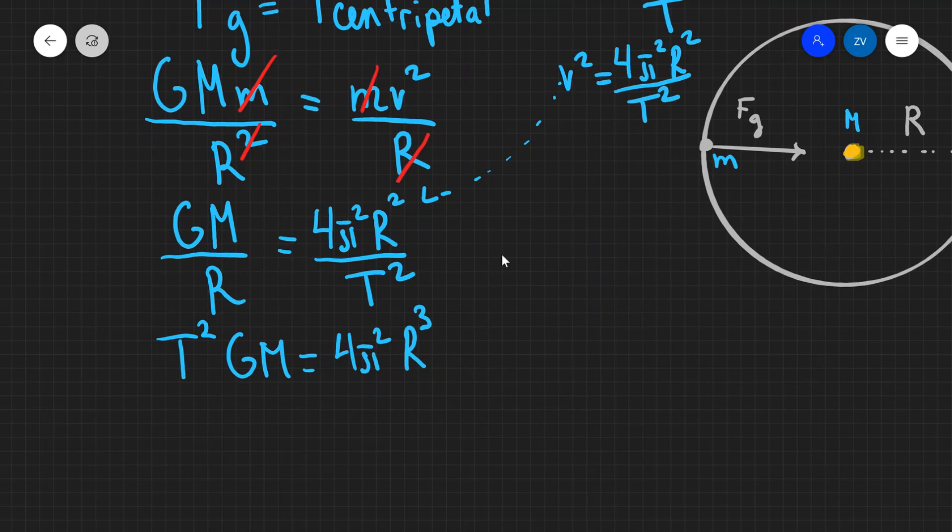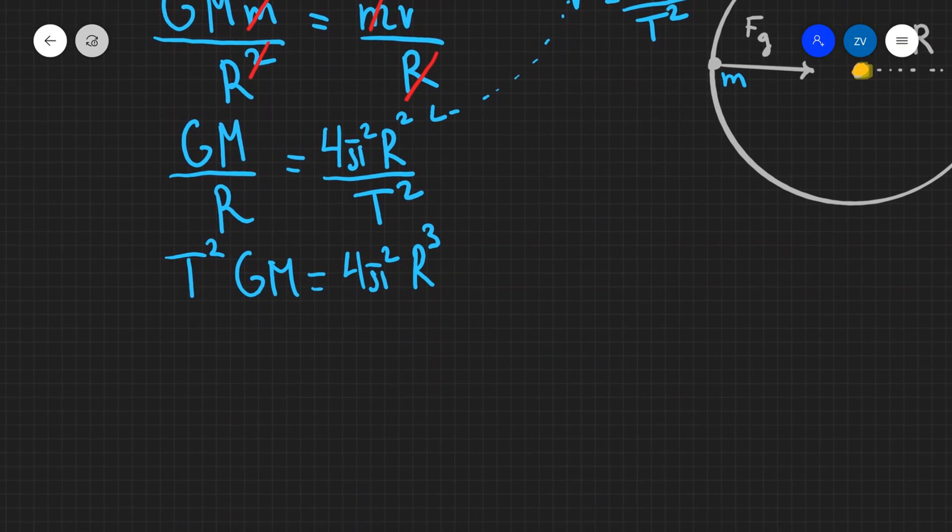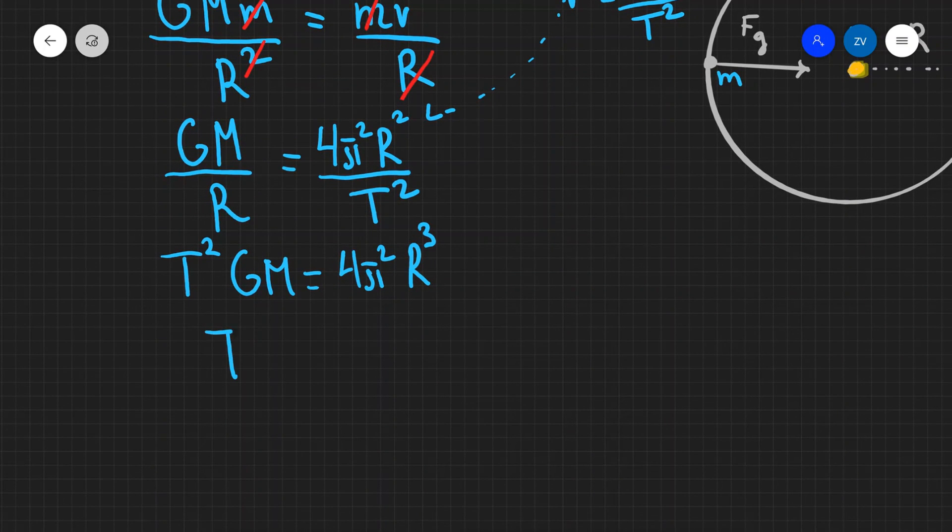My final step would be just to rearrange for t squared essentially. And what I'm going to get is that t squared will be equal to 4π squared divided by GM multiplied by r cubed. And there we have it. This is a statement of Kepler's third law. That the square of the orbital time period is proportional to the cube of the orbital distance, with our constant of proportionality being 4π squared over GM.